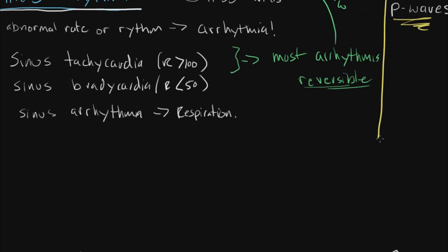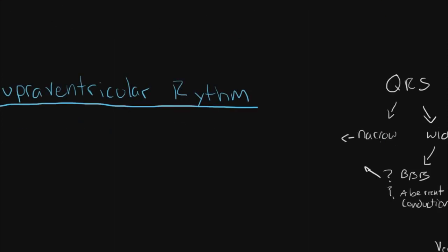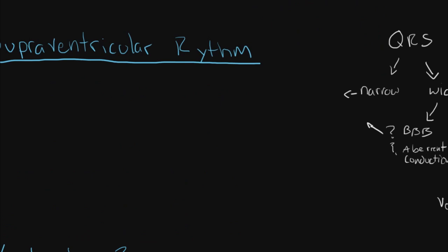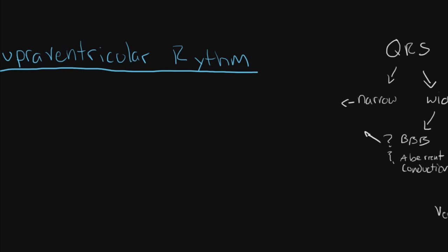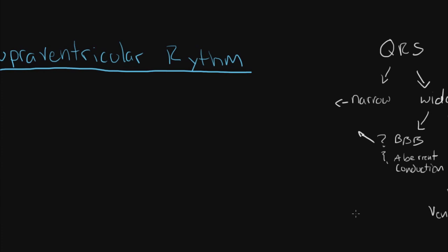We're going to move along to the next section dealing with supraventricular rhythms. Tachycardia or abnormal rates is the first thing you'll notice when dealing with a cardiac arrhythmia. Once I look at an elevated rate and I know it's not sinus tachycardia, the next thing I'm trying to figure out is whether this is SVT. First, I make sure I don't see any P-wave, so I know it's not sinus rhythm, then I look at the QRS. If it's narrow, I'm probably looking at a supraventricular rhythm. If it's wide, I look for bundle branch block or aberrant conduction. If there's no bundle branch involved, you're probably dealing with a ventricular rhythm.